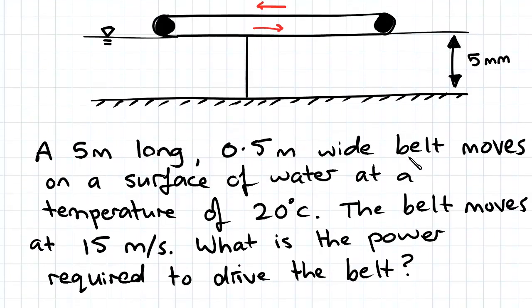So in trying to understand the question, what this is essentially asking is to find how much power is required to overcome the internal resistance of the fluid, aka the viscosity, to ensure the surface is moving at 15 meters per second.